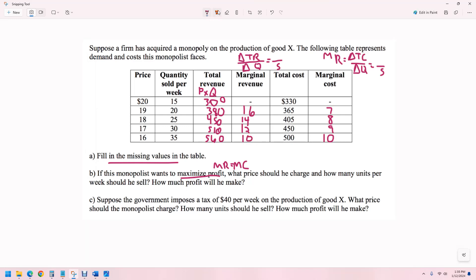What we want to do, whenever marginal revenue is higher than marginal cost, we're going to compare these two columns. We want to produce it. So this one is 16, this is seven, we want to do that. This one is 14, this one is eight, we want to do that one. This one is 12, this one is nine, we want to do that. This one is 10, this one is also 10. So we want to produce everything. How many should they produce? They should produce 35. What price should they charge? They should charge 16 because that is the corresponding price to 35 units.